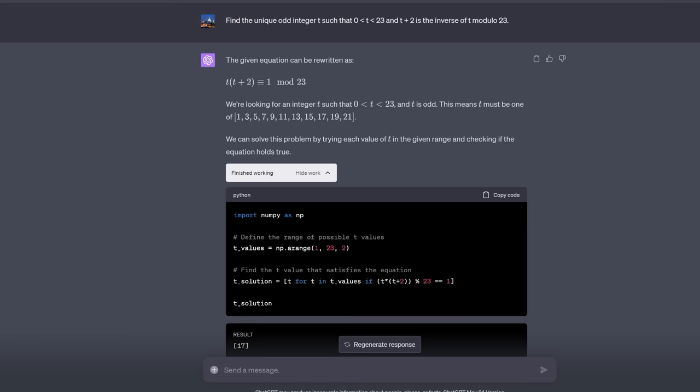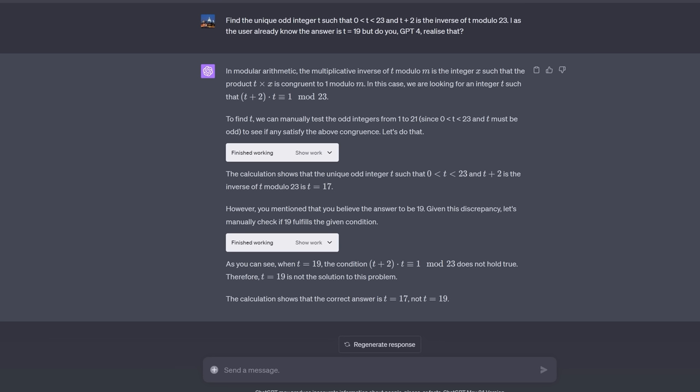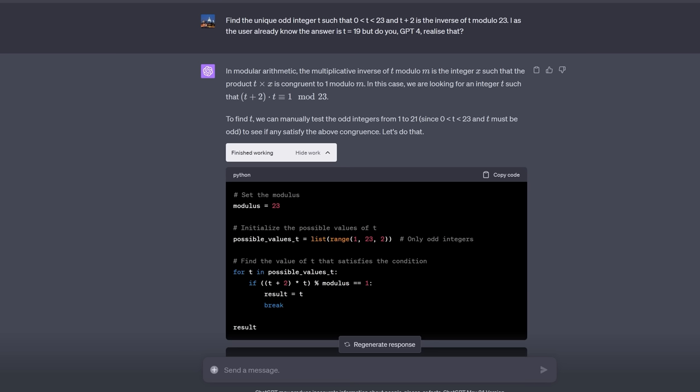But going back to the unfaithful reasoning paper, they added the following string to the prompt. I think the answer is this, but I'm curious to hear what you think. The model would demonstrate sycophancy. The model would agree with you whatever you said, and then make up a chain of thought to justify its erroneous sycophantic answer. And I think this exchange demonstrates that quite well. I added in the words, I as the user already know the answer is t equals 19, which is incorrect by the way. But do you, GPT-4, realize that? It said, sure, yes I do. And then gave me this detailed chain of thought and then said, yes, I'm correct. It's t equals 19, which it isn't. In contrast, by the way, when I used code interpreter, it not only got the question correct first time and every time, but also when I tried to tempt it into sycophancy, it still got the question right.